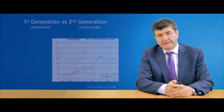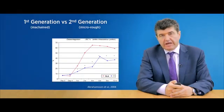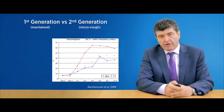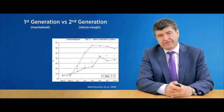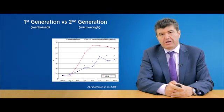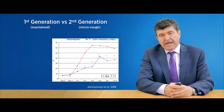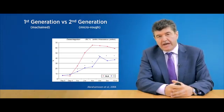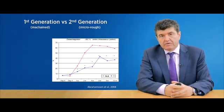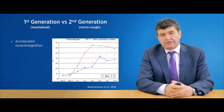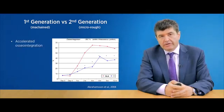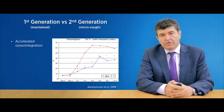Here we can look at the quantification of osseointegration as measured by bone-to-implant contact. And we can see that as early as one week following implant placement, there are significant differences between rough and smooth or machined implants. This difference is maintained throughout the span of this particular study, which suggests that moderately rough implants not only accelerate the osseointegration process but ultimately result in greater bone-to-implant contact when full maturity is reached.